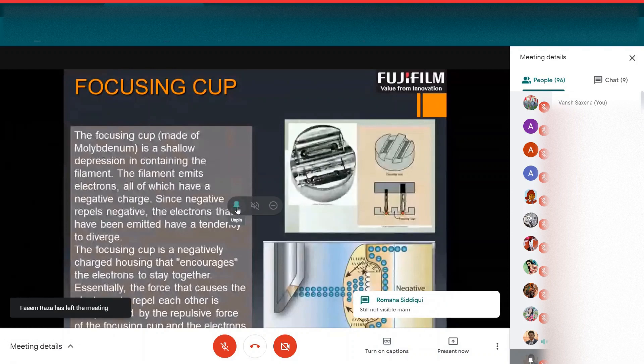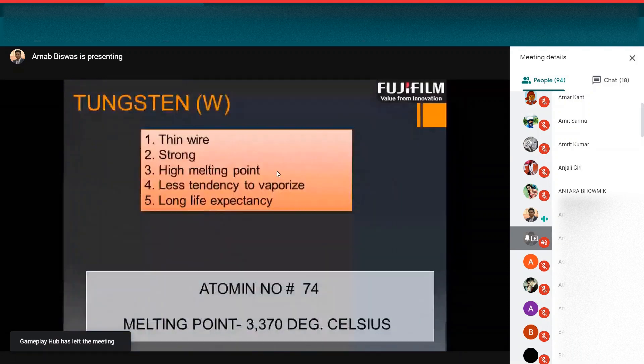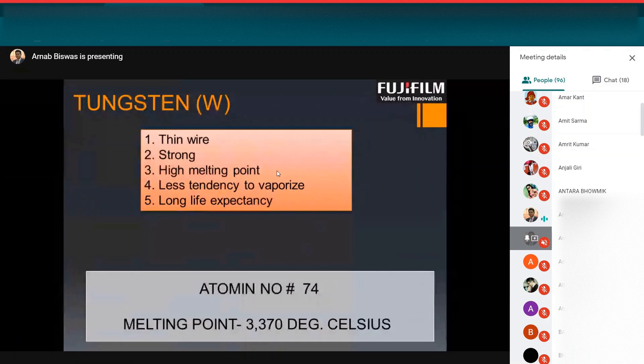Modern tubes are two filament. We use tungsten as a filament material. Tungsten has a high atomic number, 74. The melting point is 3,370 degrees Celsius. So at that high melting point, it has less tendency to vaporize. The function of tungsten is it has a high melting point, less tendency to vaporize and long life expectancy.